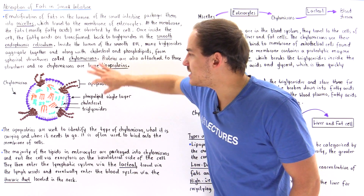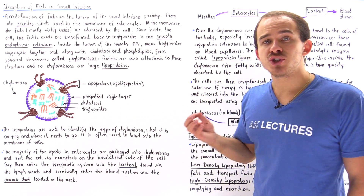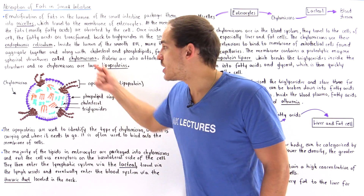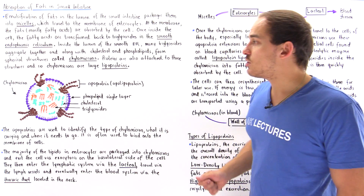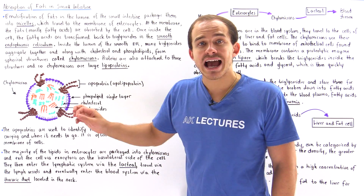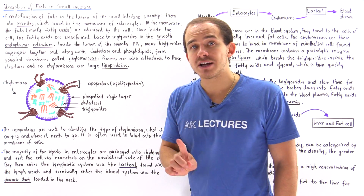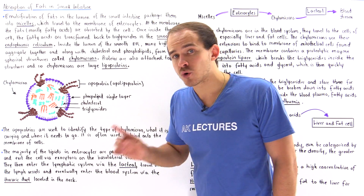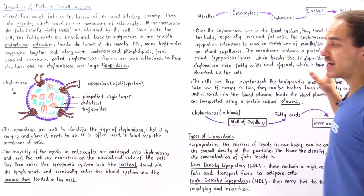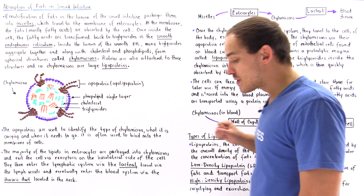These apoproteins are used to recognize this chylomicron and to attach onto special receptor proteins found on the membrane of certain target cells.